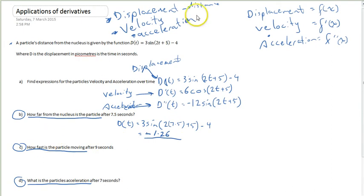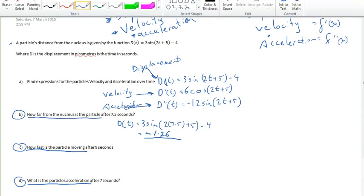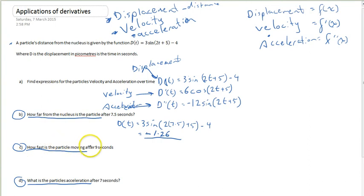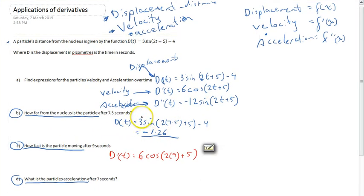Now this question, part C - I might just change colors here so we can see what's going on - how fast is the particle moving after 9 seconds? In this particular case we need to use our velocity function, which is the derivative of our displacement function, and sub in a value: 6cos(2 × 9 + 5). Again, you grab your graphics calculator and make sure you're in radians mode. When I put that into my calculator I end up with -3.20.